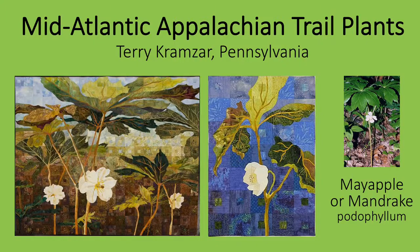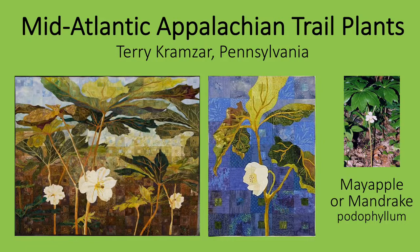Terri Kramzer is inspired not just by spring, but by plants she finds on her walks along the Mid-Atlantic Appalachian Trail. These are two quilts she has made depicting the mayapple or wild mandrake plant. She has beautifully captured its twin umbrella-like leaves and solitary flowers. Note the background, which is entirely squares with a second small square in the center — the result is a complexity of color and pattern like that we find in nature.